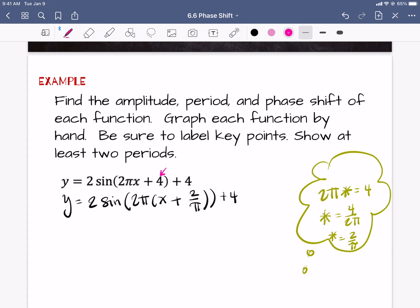So now I can tell you what the amplitude is, the period, and the phase shift. The amplitude comes from the coefficient of the function, that's 2. The period is coming from taking the original period of sine, which is 2π, and dividing it by the coefficient of x. So that's 2π over 2π, so that's just going to be 1.